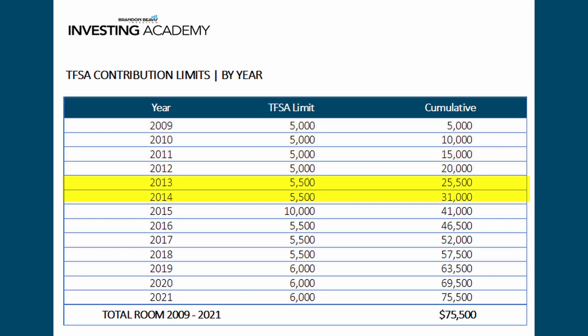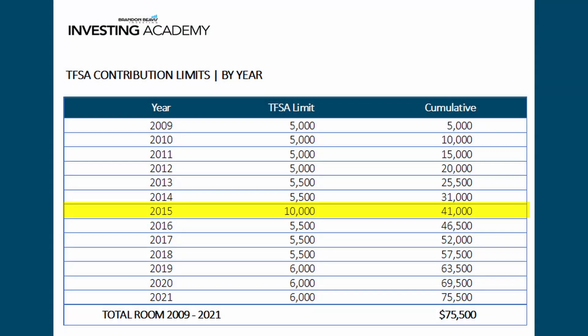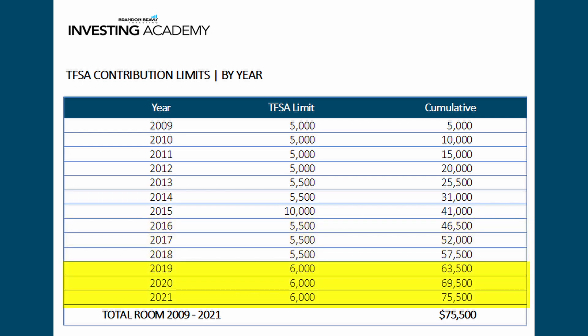In 2013 the CPI feature kicked in and the amount was raised to five thousand five hundred, remaining the same through 2014. You'll notice a real anomaly in 2015: the final budget before the general election, the Conservative government raised the limit to ten thousand dollars. The Liberals won that election and brought it back down to $5,500 in 2016, 2017, and 2018. Then again the inflation factor kicked in, and in 2019, 2020, and 2021 the contribution number has been six thousand dollars.